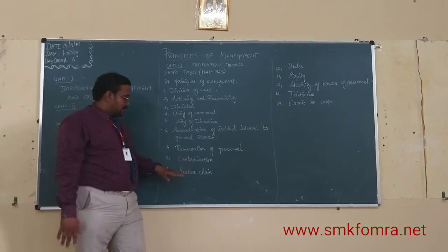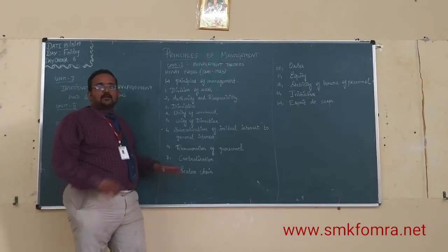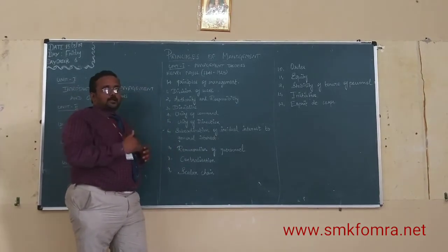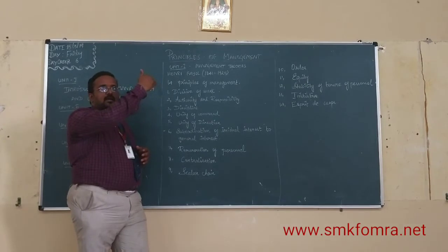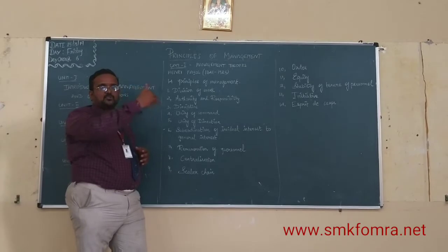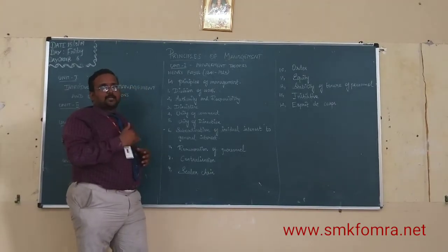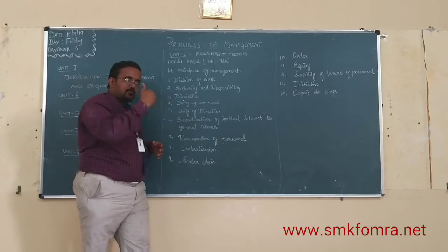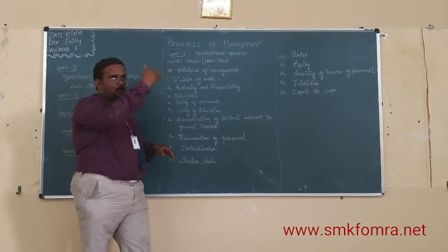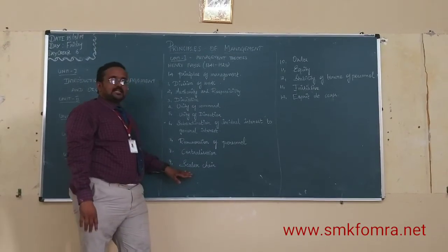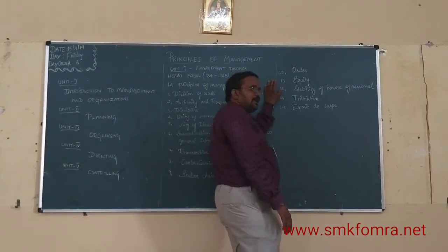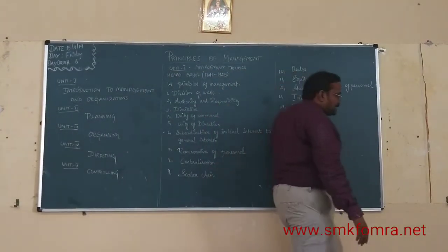The eighth principle is scalar chain. In an organizational structure, a CEO oversees the project at the top, and orders flow from the top level down to the lower levels. That flow of authority from top to bottom is called the scalar chain.